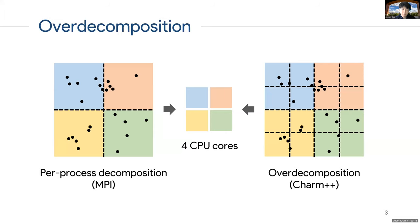For example, let's say we are trying to run a very simple 2D particle simulation on four CPU cores. With MPI, what you would generally do is decompose the problem domain into four subdomains and map each subdomain to a single MPI process. But with over-decomposition, you can decompose the problem domain into however many subdomains you like. In the example shown in the diagram, we decompose it into 16 subdomains or 16 chares. The Charm++ runtime system will then map these 16 chares to the four CPU cores.